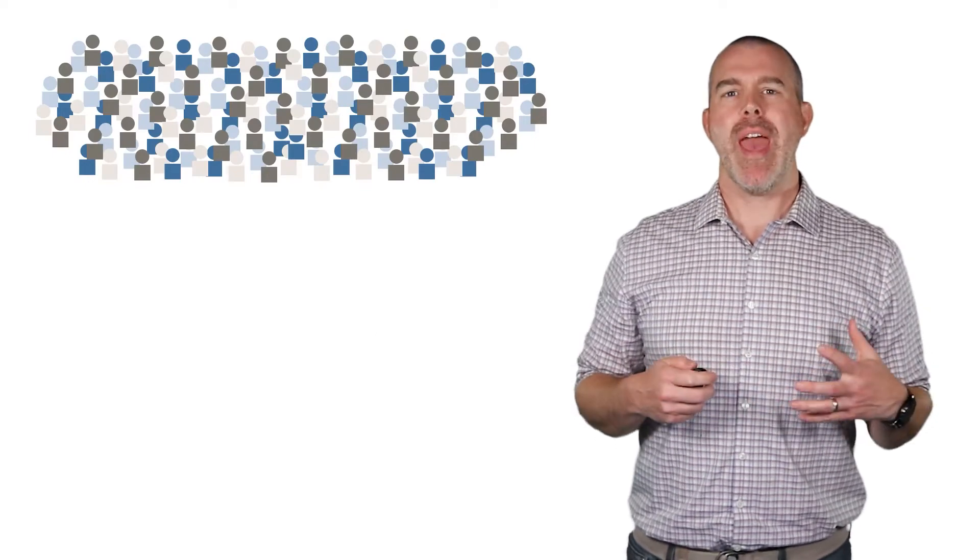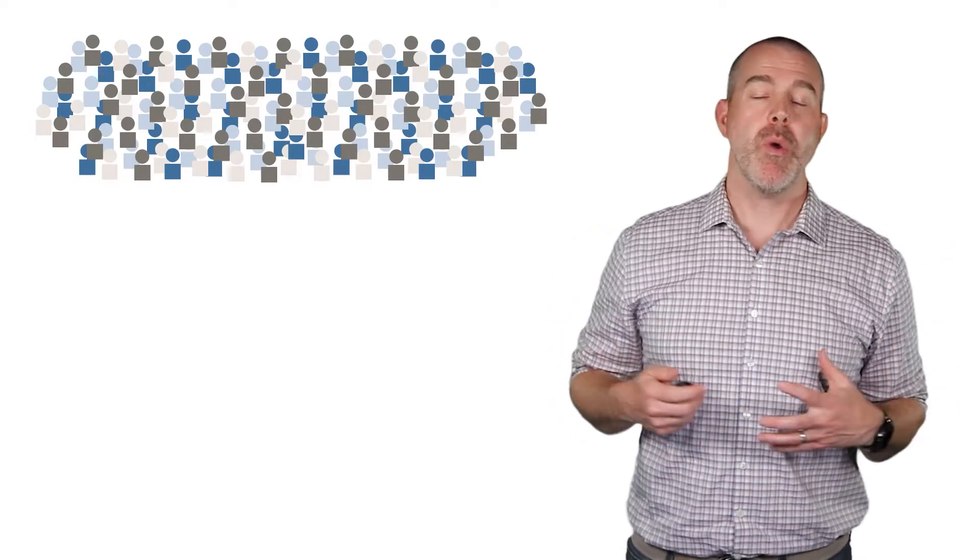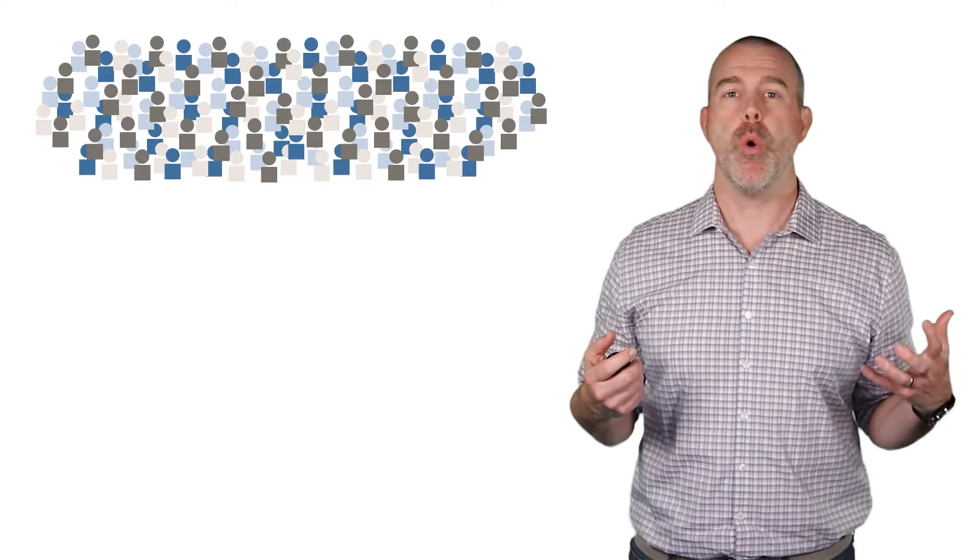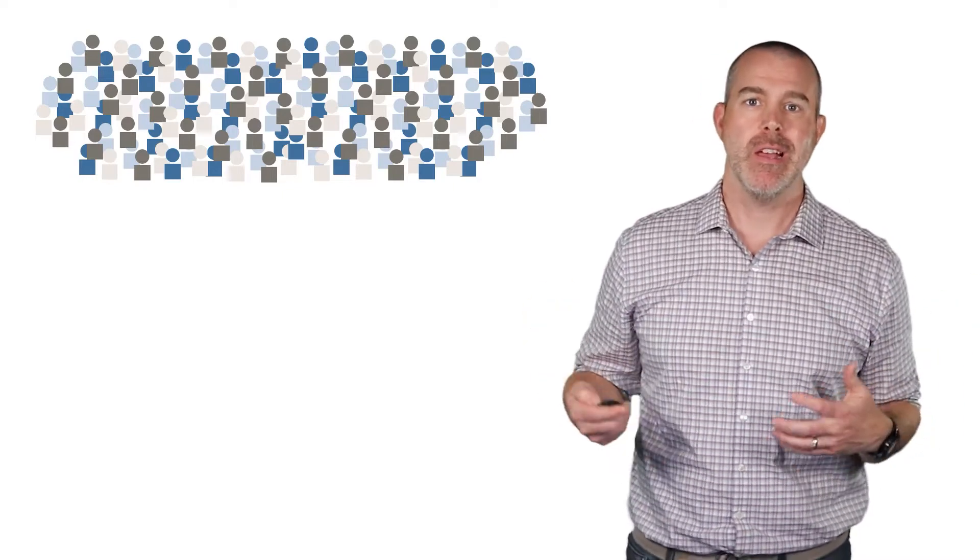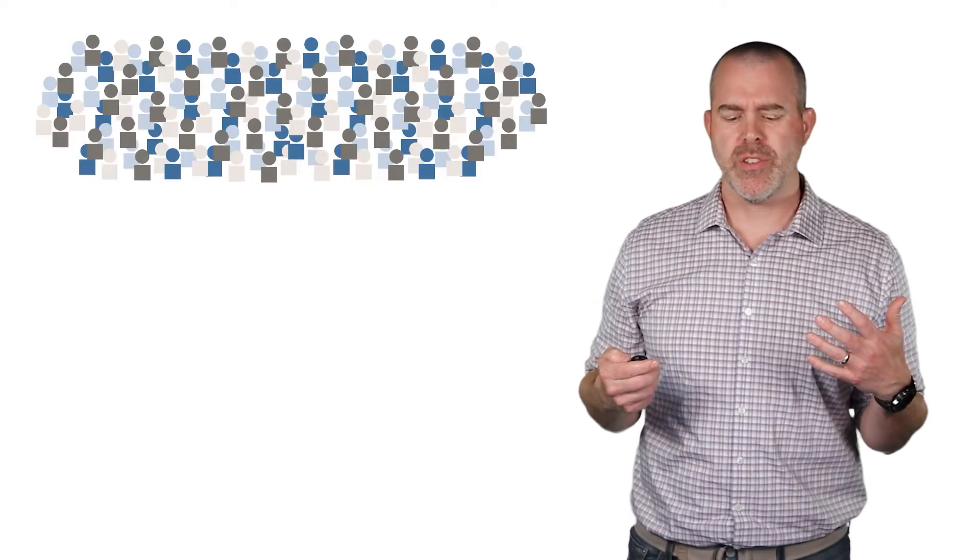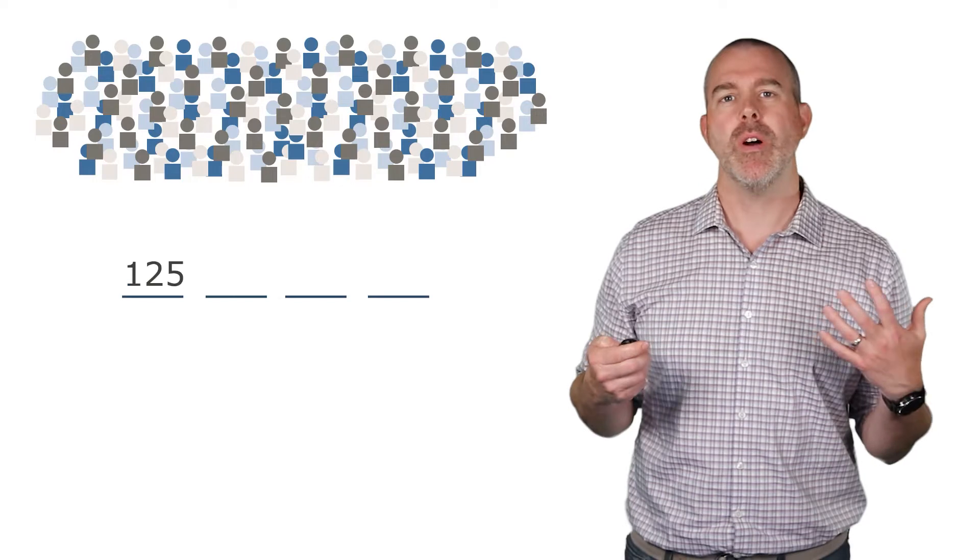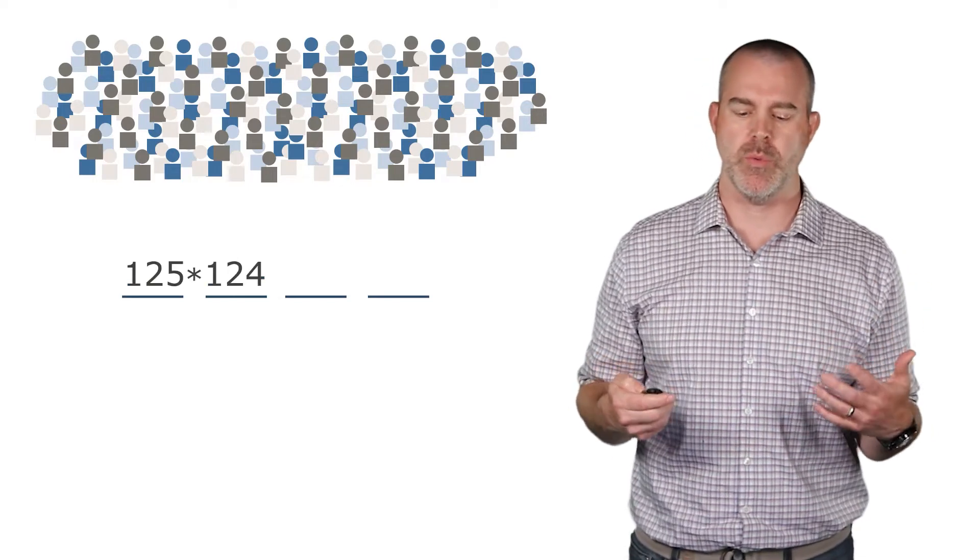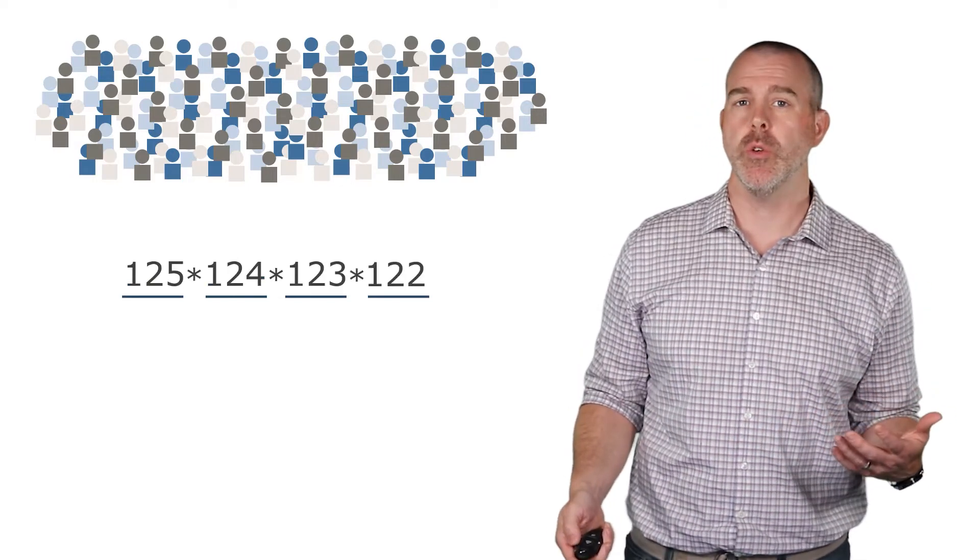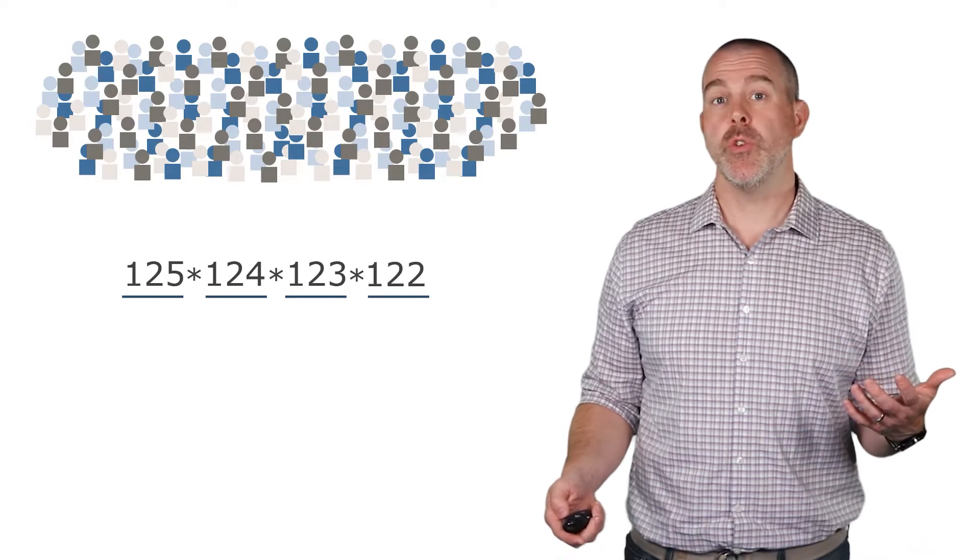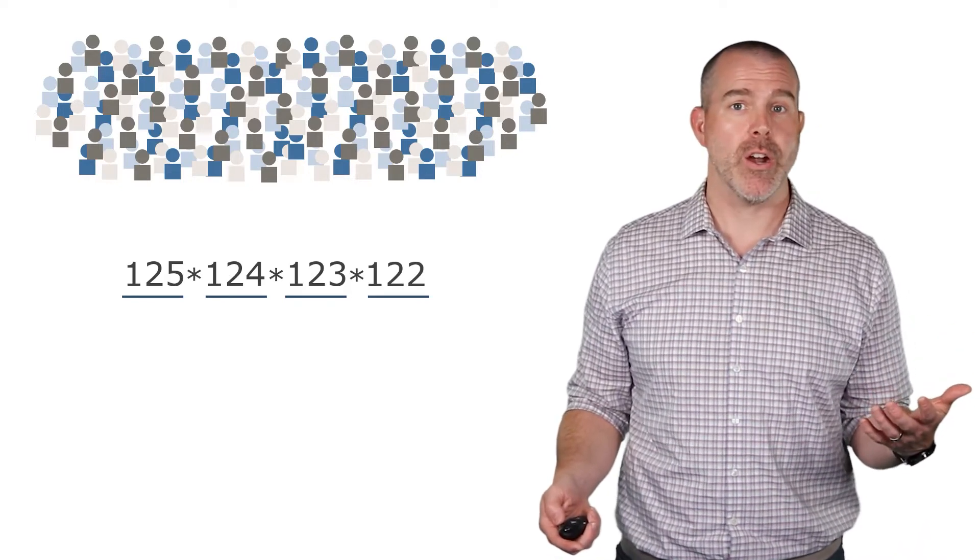Next topic here. What if we have a group of 125 people? We want to know how many ways can we just pick four of them to be on some kind of committee. So we've got all these different possible groups, but we don't care what order they're in. So this is a slightly different question. We're going to start it the same way. We've got four spots. So we could do a permutation, 125 times 124 times 123 times 122. The problem is this assumes that the order of them matters.